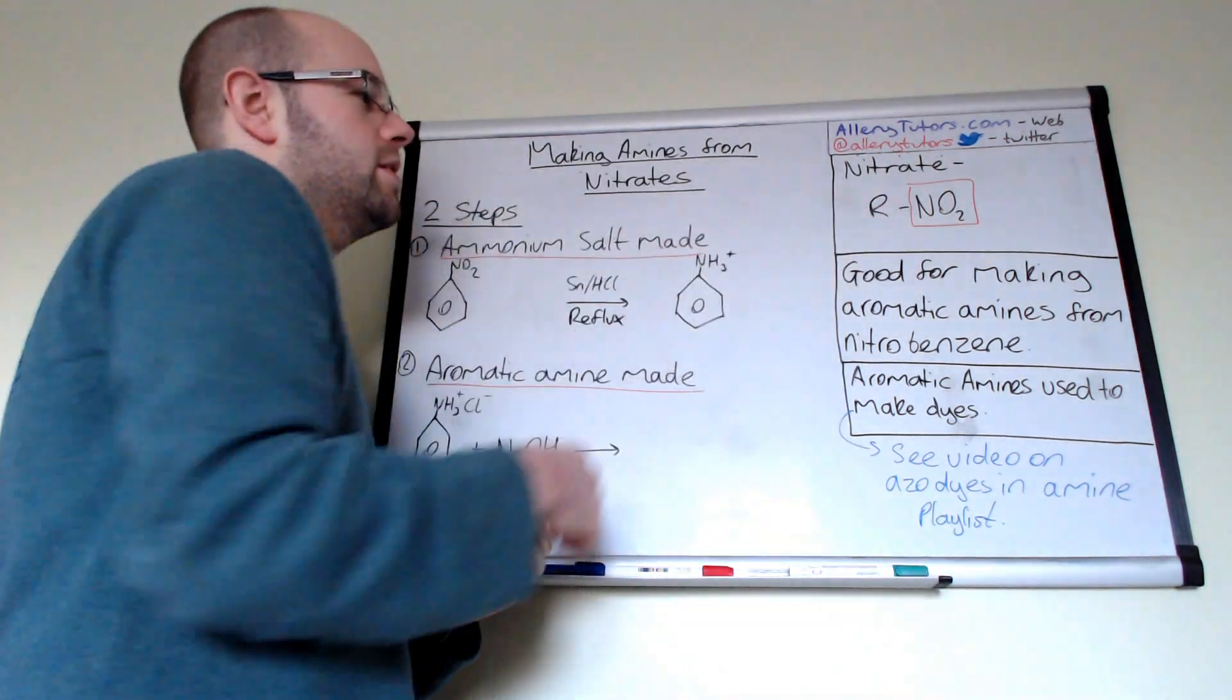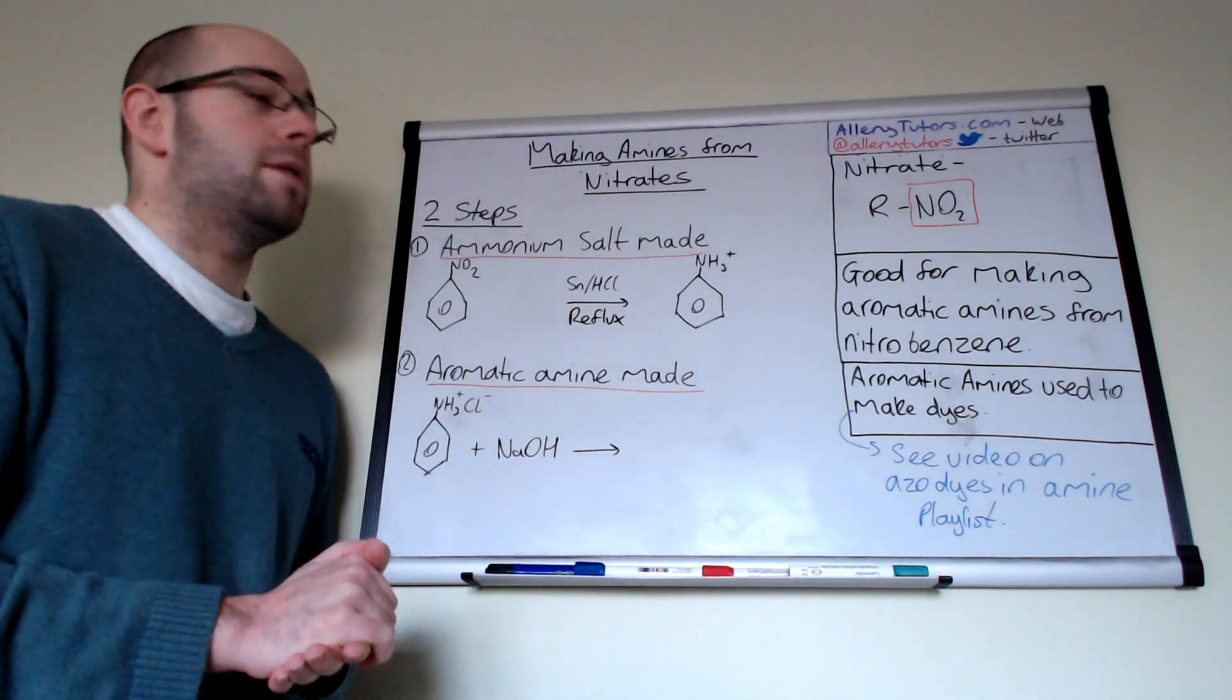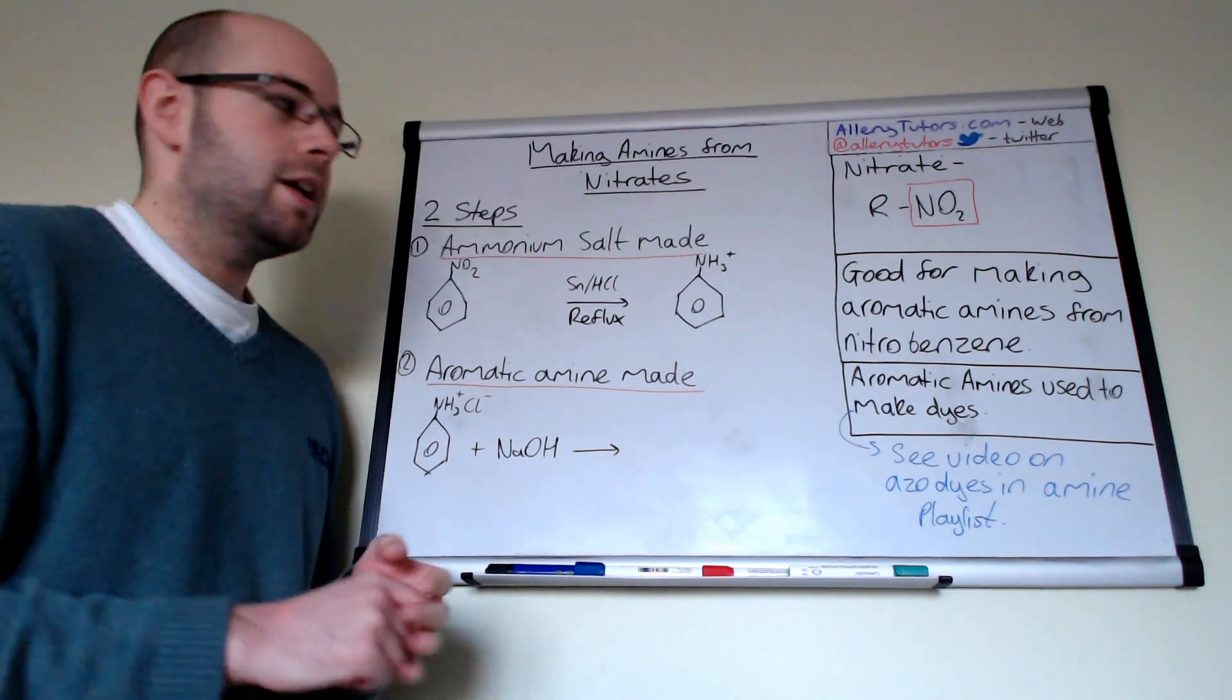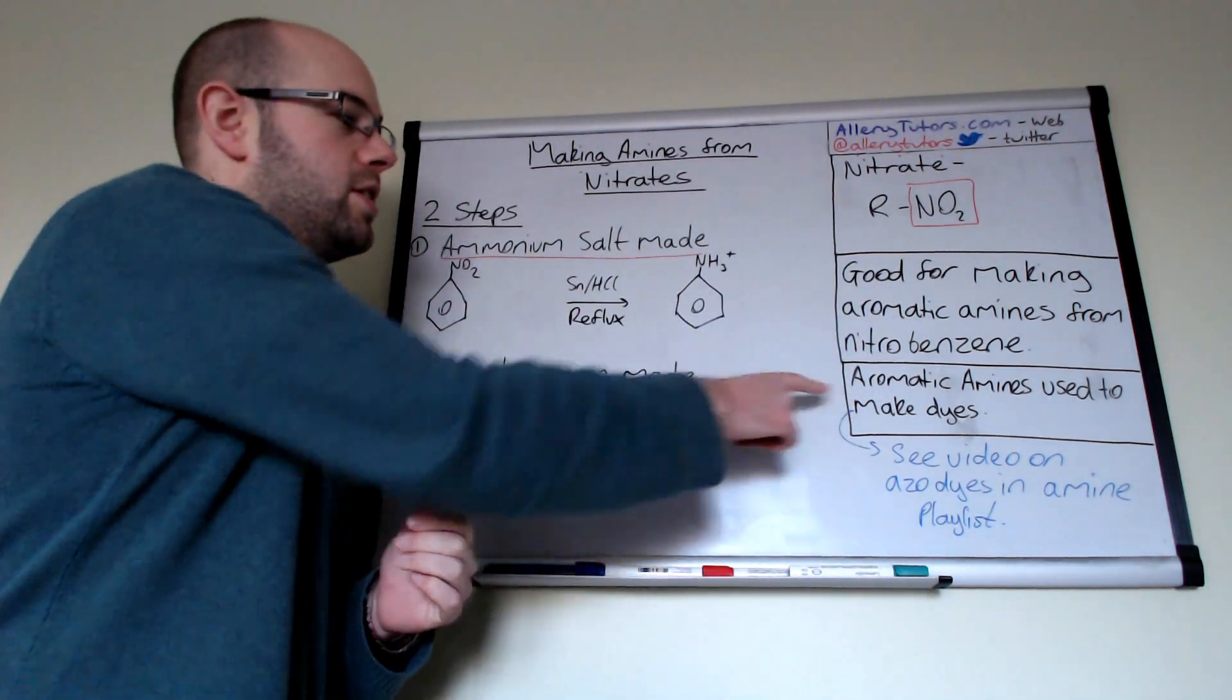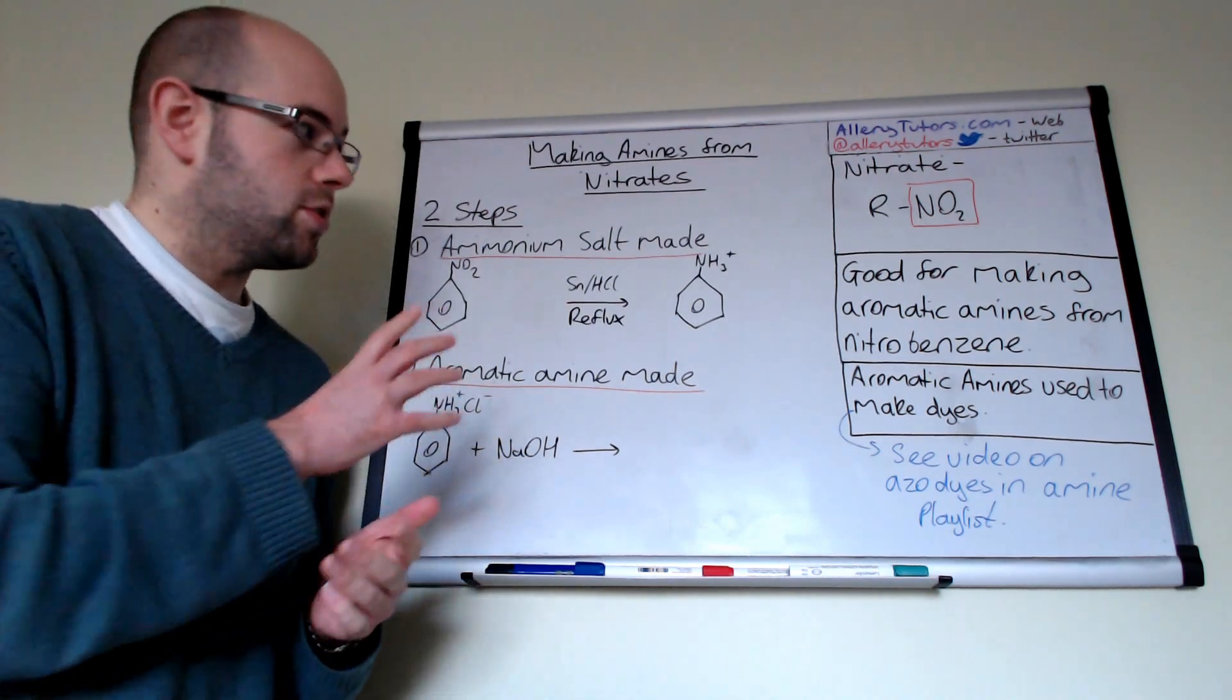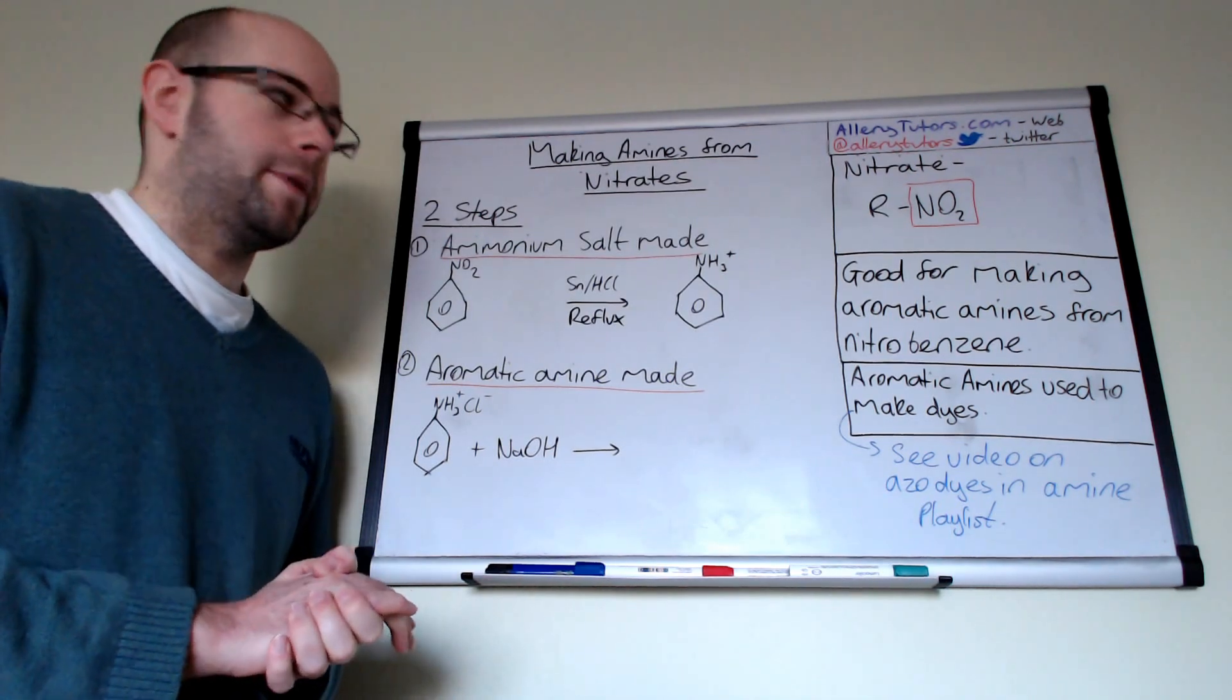So nitrobenzene can be used to make your amine, an aromatic amine group, something like phenylamine. And phenylamines are actually really good for making dyes, as you can see over here. So they do have a really important use, and I'm just going to show you the two very quick steps to show you how to make the amine.